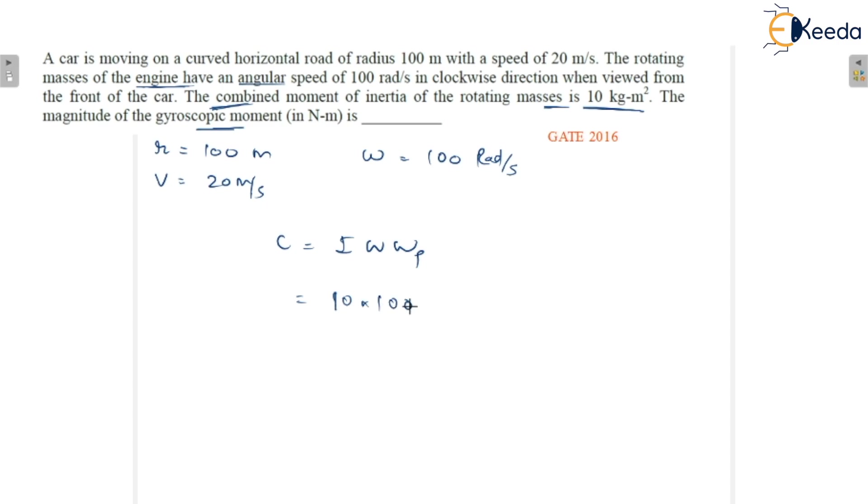Omega is 100. What is ωp? Basically, ωp is the angular velocity of precession that is not given directly, but we calculate it as V by R. So V is 20 and radius is 100, giving 0.2 radians per second.